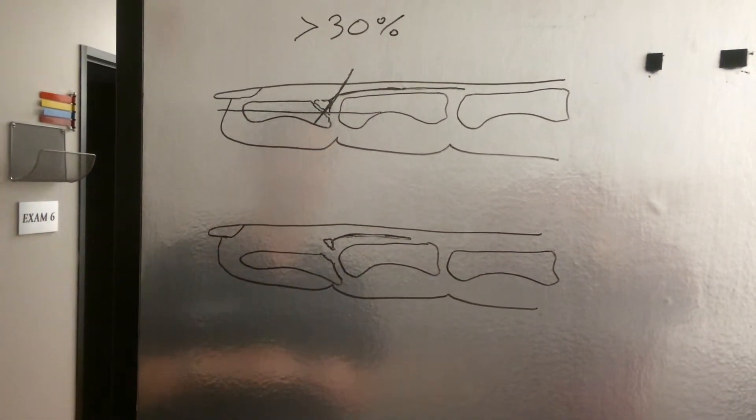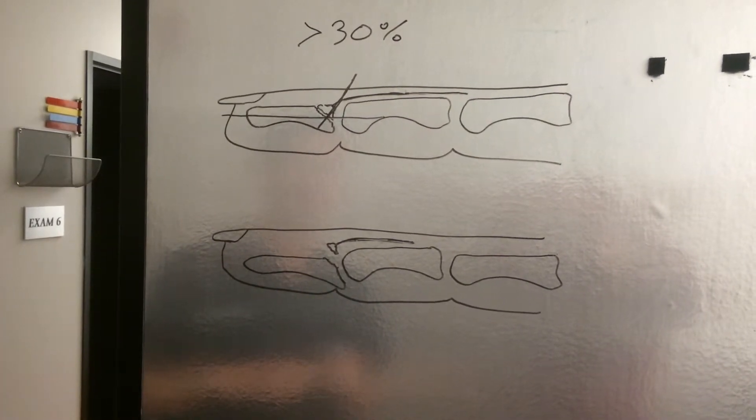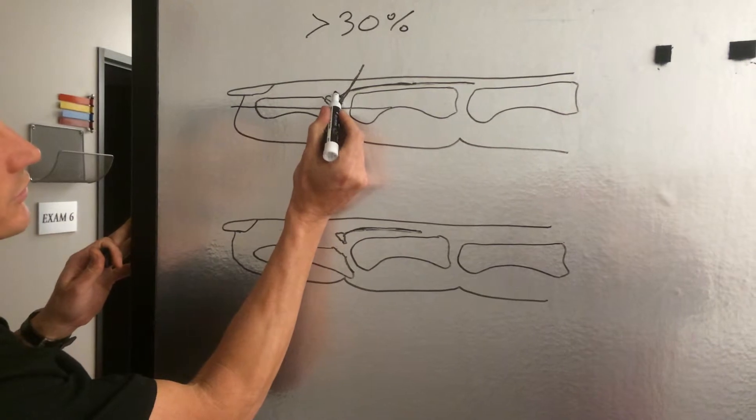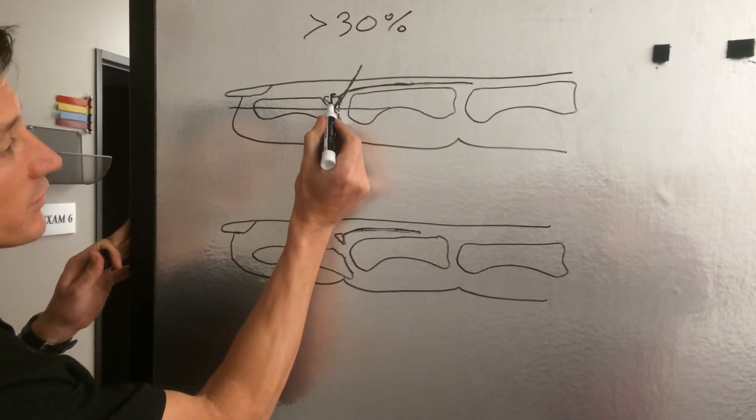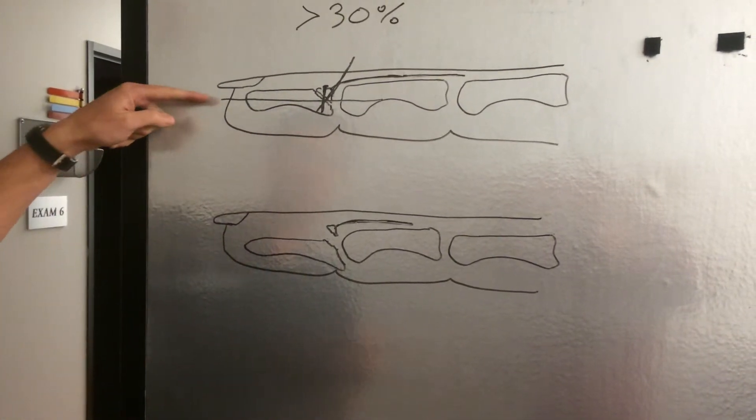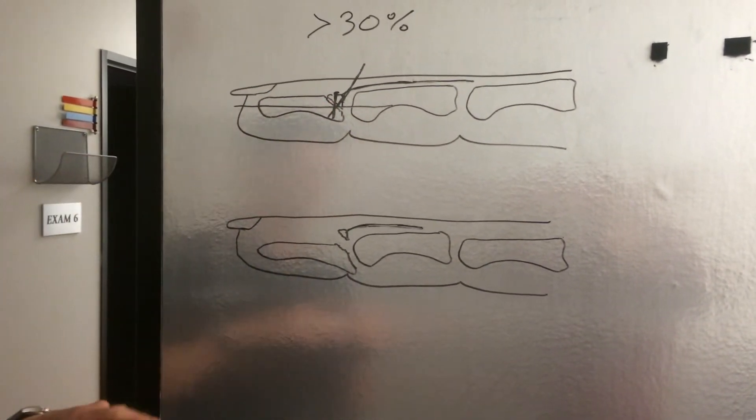Another way is with small little screws. We can put little screws in this piece if the piece is big enough. We can put little screws that go across the piece to hold it. Oftentimes we have to supplement that with one K-wire for a few weeks until it heals enough to support with just that one screw.